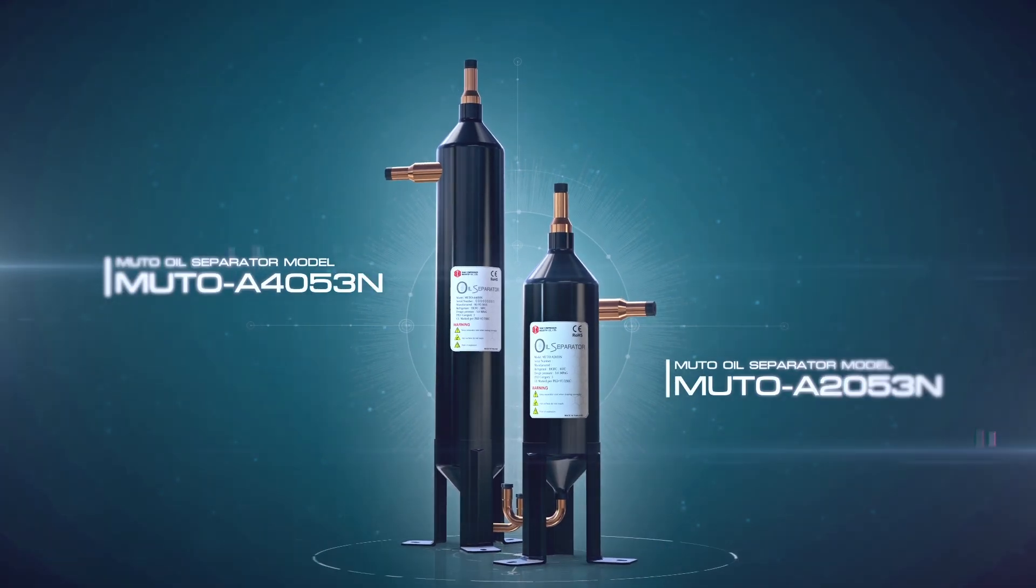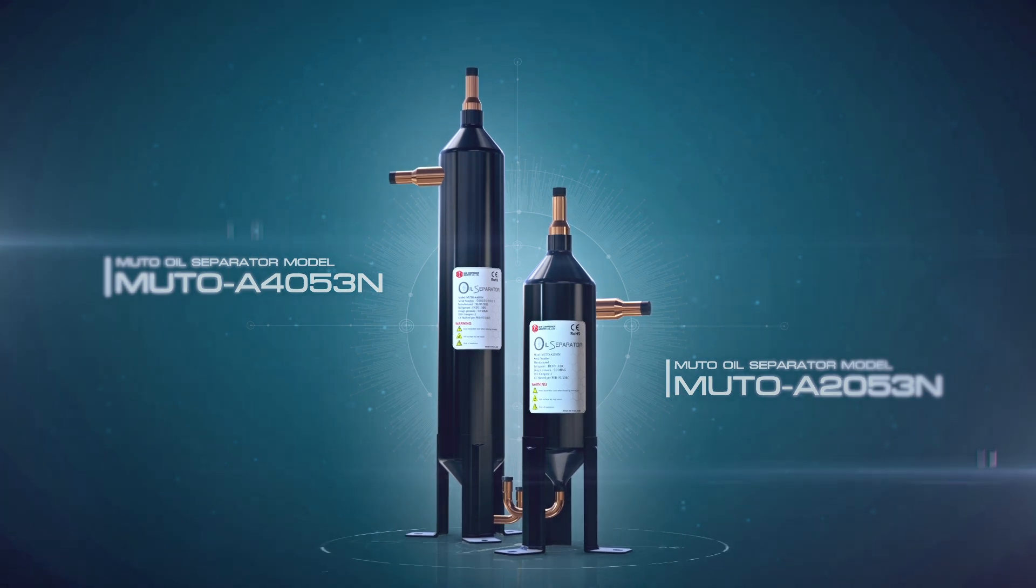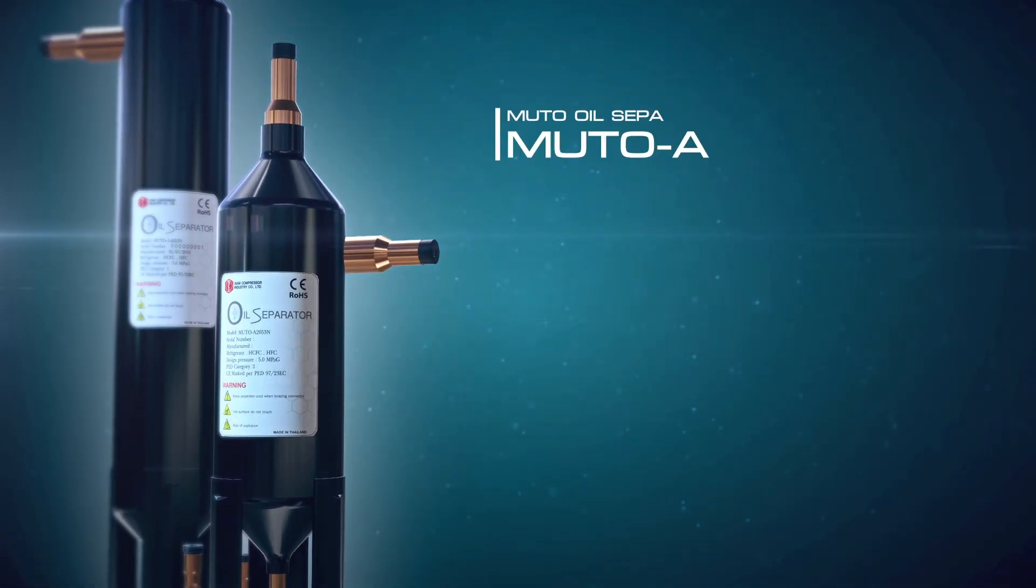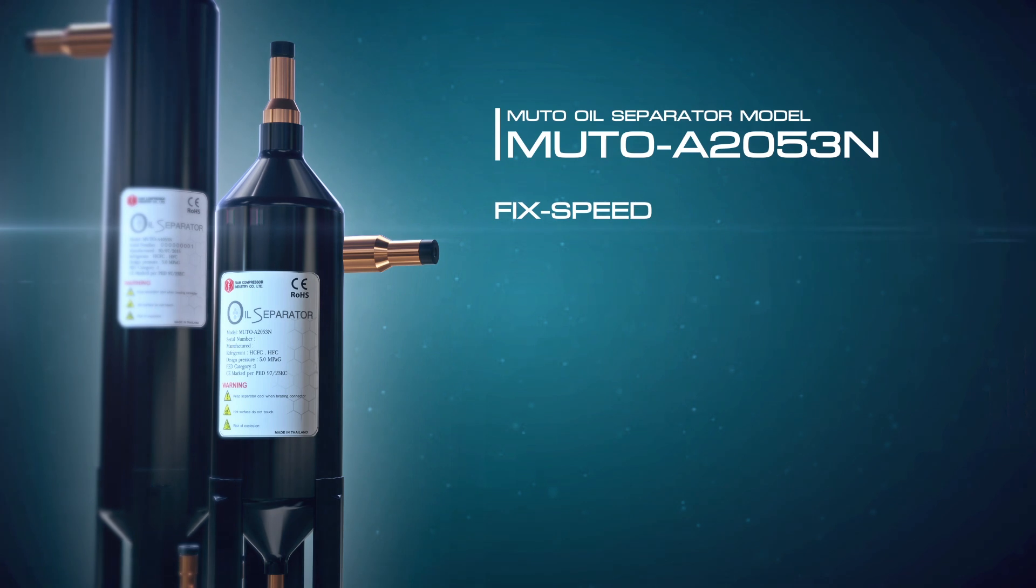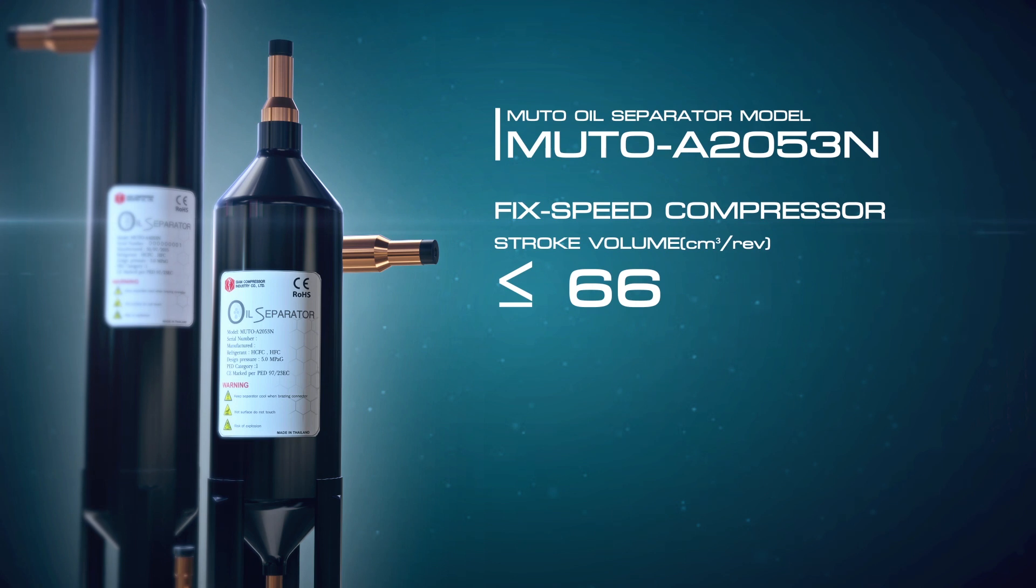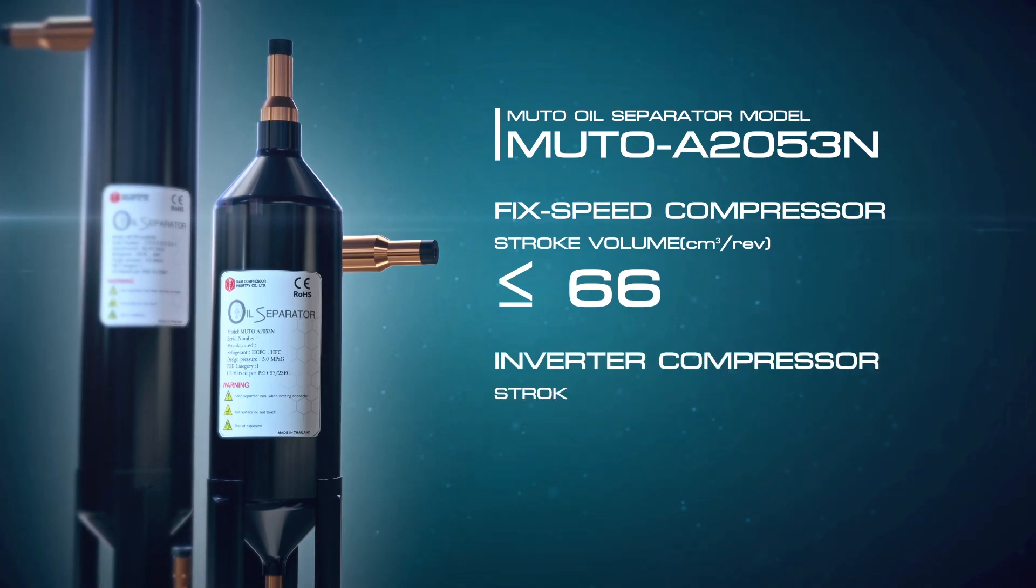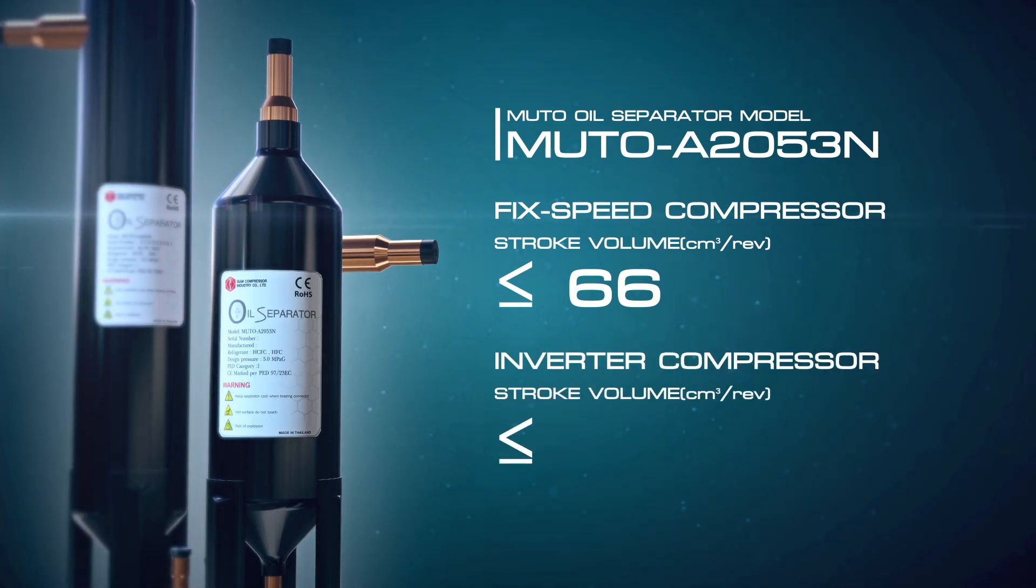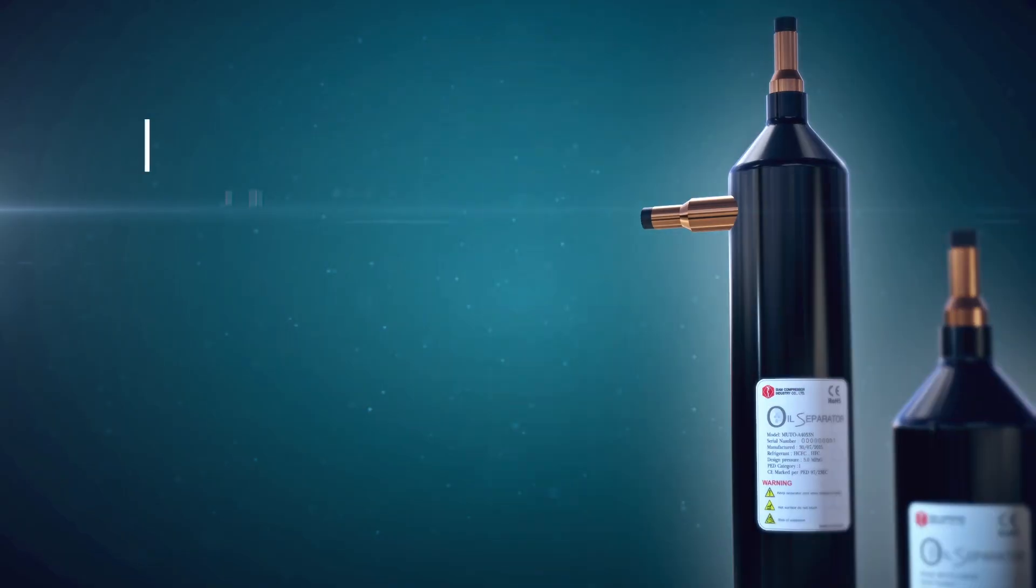The MUTO Oil Separator comes in two models: MUTO A2053N compatible with fixed speed compressors not exceeding 66 cc or inverter compressors not exceeding 33 cc.